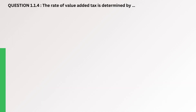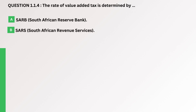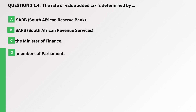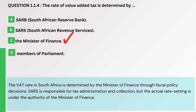Question. The rate of value-added tax is determined by. A. SARB, South African Reserve Bank. B. SARS, South African Revenue Services. C. The Minister of Finance. D. Members of Parliament. The correct answer is C. The Minister of Finance. The VAT rate in South Africa is determined by the Minister of Finance through fiscal policy decisions. SARS is responsible for tax administration and collection, but the actual rate setting is under the authority of the Minister of Finance.